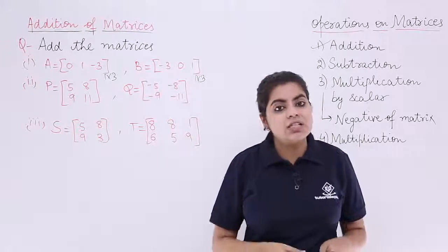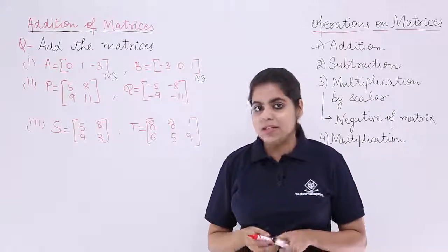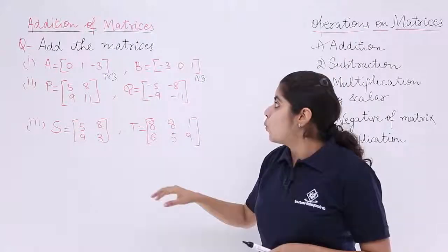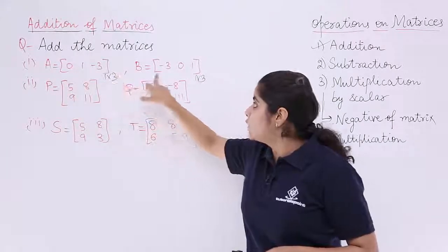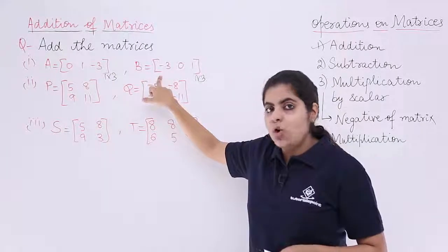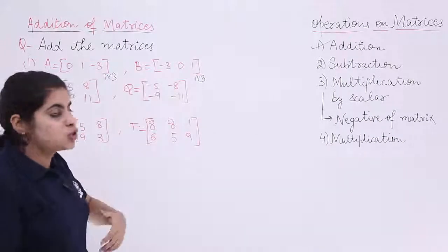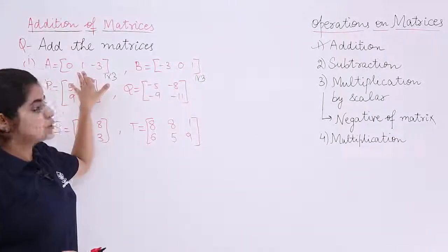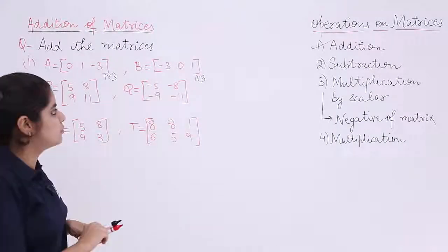And since the addition is possible, I can find out the resultant matrix. The resultant matrix will be a matrix wherein each element has to be added. The first element is 0. Here it is minus 3. So, the first element would become minus 3. And similarly, go towards the second element. The second element is 1 and here it is 0. So, it is 1 and so on. Let us write it first.